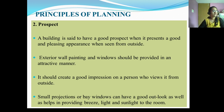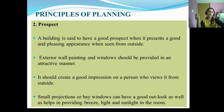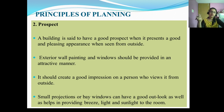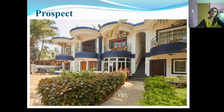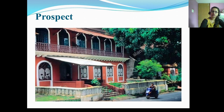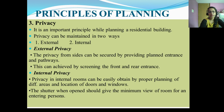Prospect means the view one gets when looking through doors and windows in the external walls. A building is said to have good prospect when it presents a pleasing appearance from the outside. This can be achieved by providing small projections or bay windows to give a good outlook. A picture of a bungalow with good prospect is shown, demonstrating how the location and shape of doors enhances the building's appearance.